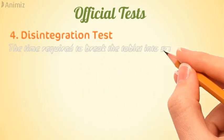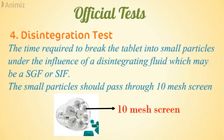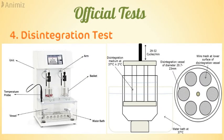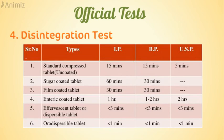The fourth official test is the disintegration test. Disintegration time is the time required to break the tablet into small particles under a disintegrating fluid — simulated gastric or intestinal fluid — with particles passing through a 10-mesh screen. The apparatus consists of a basket rack holding six open plastic tubes covered at the bottom with a 10-mesh screen, immersed in a bath held at 37°C in a one-liter beaker. The rack moves up and down at a specific rate.